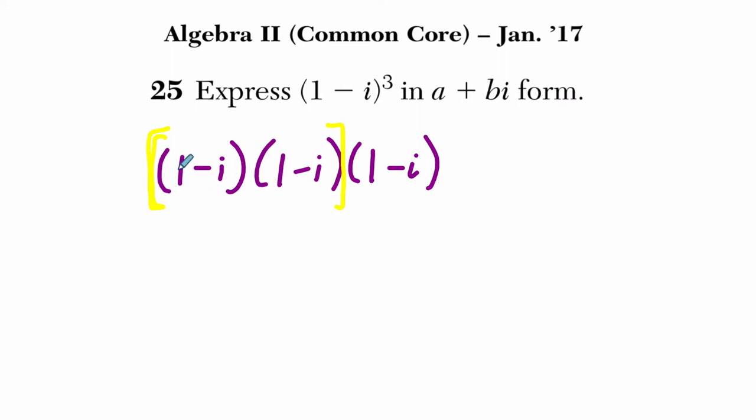So here we'll multiply these two binomials. 1 times 1 is 1, 1 times negative i is negative i, and then another negative i times 1, altogether it's negative 2i, and then negative i times negative i is plus i squared.